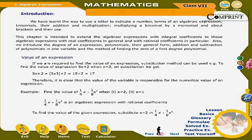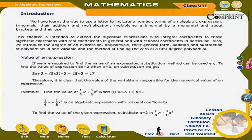Chapter 2: Algebraic Expressions. We have learnt the way to use a letter to indicate a number, terms of an algebraic expression, trinomials, their addition and multiplication, multiplying a binomial by a monomial, and about brackets and their uses. This chapter is intended to extend algebraic expressions with integral coefficients to those with real coefficients in general, and rational coefficients in particular.